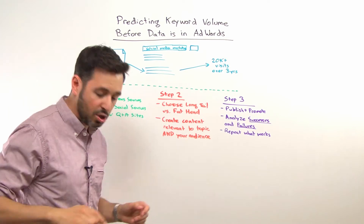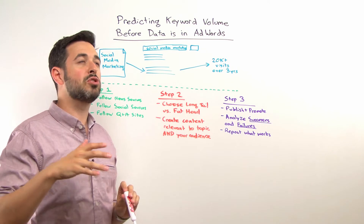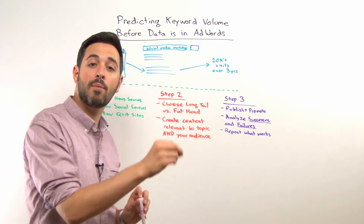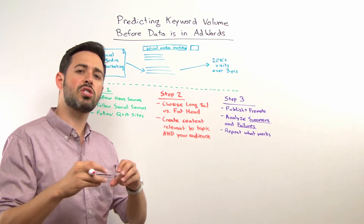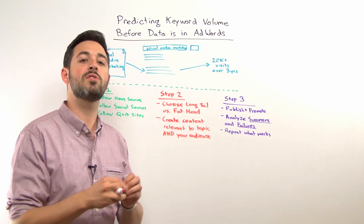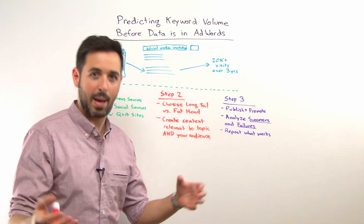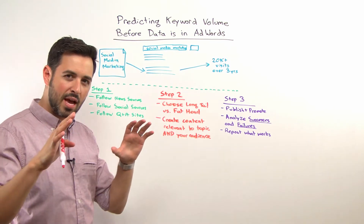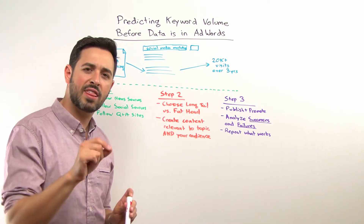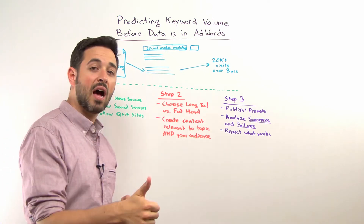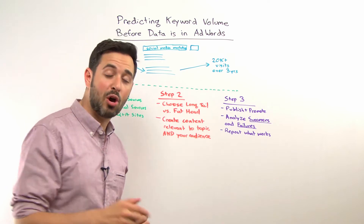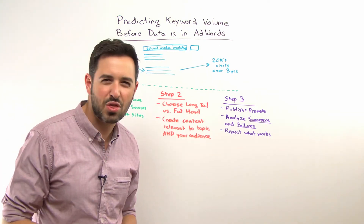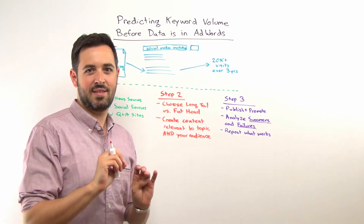Let me start with an example. SEOmoz, years ago — I think it was 2006, maybe 2005 — Danny Sullivan on Search Engine Land started writing about social media marketing. He was talking about how with the emergence of Twitter, and with Facebook opening up to not just college students, and MySpace, Digg, Reddit, and StumbleUpon were all popular at the time. He wrote about this topic of social media marketing, and I thought that's a really interesting one — social media marketing is going to be big. There was no search volume for it at the time; if you went into Google AdWords and typed in social media marketing, you'd see no more than 30 to 50 searches a month. It just wasn't a popular topic yet, but it was about to become one.